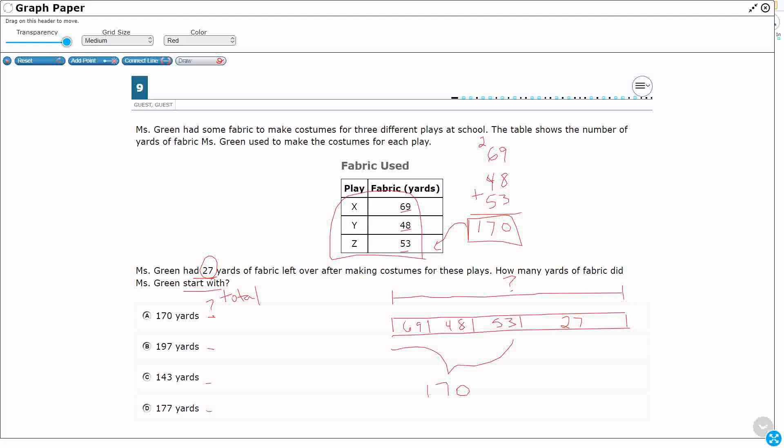So then if I've already done that work, right, then it seems like all I need to do is I've got a part-part-whole. Now that I've done the work of adding the 69, the 48, and the 53 to make 170, let's just add 170 and 27. So that's going to be seven, it's going to be nine. That's 197. That looks a little bit better. I've got that right there.